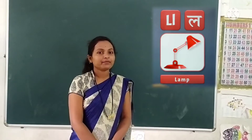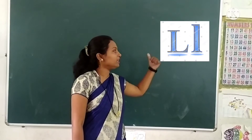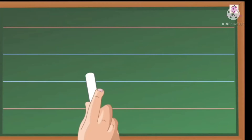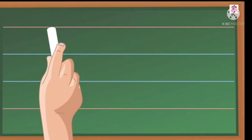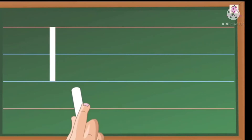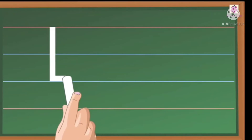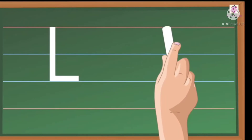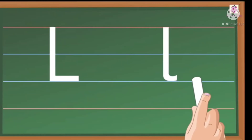Dear student, how to write letter L — capital L with small l. How to write capital L with small l? See here. One standing line and one sleeping line — make capital L. Now next, small l: one standing line and a small cup — make small l.